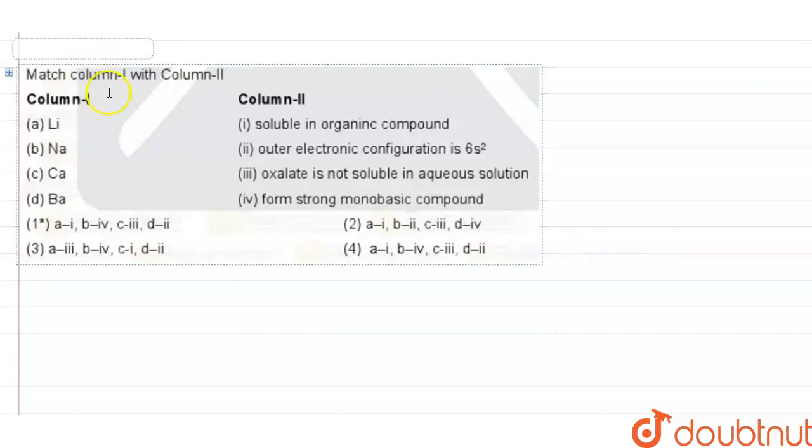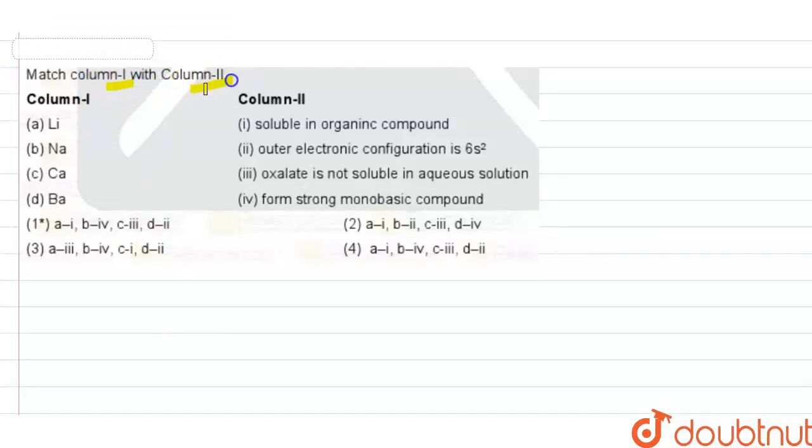Hello everyone, so the question is to match column 1 with column 2. In column 1 we have some options: lithium, sodium, calcium, and barium.